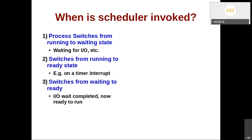Third, the scheduler is invoked when a process switches from waiting to ready — the IO is completed, the process is moved to the ready state, and after the interrupt handler completes its job, the scheduler is invoked again. Fourth, when a process terminates by calling the exit system call — on Xv6 user-land applications must call exit; on Linux the compiler ensures main returns into a C library function which calls exit. All processes exit by calling the exit system call, and after exit some other process should run.